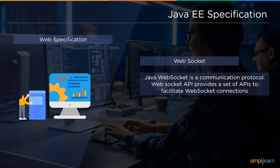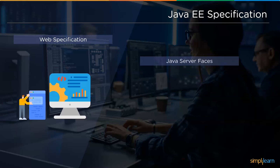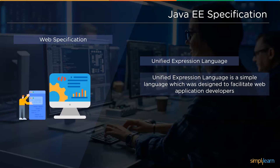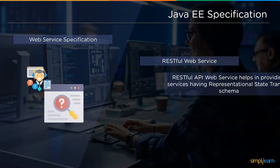Followed by Java Servlet, we have Java WebSocket. Java WebSocket is a computer communication protocol, and this API provides a set of APIs to facilitate WebSocket connections. Next we have Java Server Faces, which is a service that helps in building graphical user interfaces out of components. Finally, we have the Unified Expression Language, a simple language designed to facilitate web application developers.